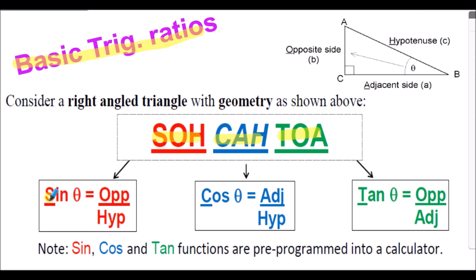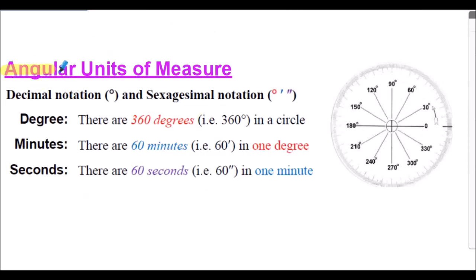The sine of the angle is the opposite side over the hypotenuse — that's the SOH part of the mnemonic. The cosine of the angle is the adjacent over the hypotenuse. And the tangent of the angle is the opposite over adjacent. As far as angular units of measure is concerned, we'll be using both the decimal notation — decimal degrees — and the sexagesimal notation: degrees, minutes, and seconds.